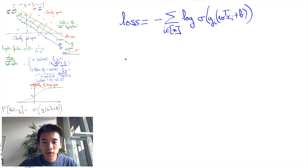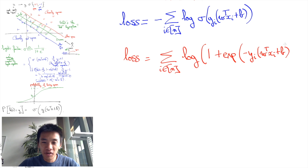And if you do the computations replacing sigma by its expression that I've given earlier, you see that this corresponds to the sum of the logarithm of 1 plus the exponential of minus y_i w transpose x_i plus b. Why is this formula so great?